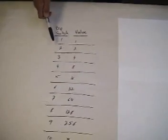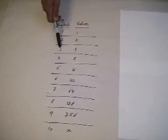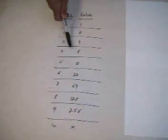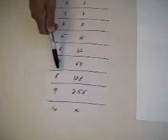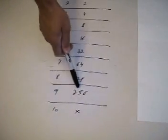Dip switch number 1 has value 1, dip switch number 2 value 2, dip switch number 3 value 4, 4 has 8, dip switch number 5 is 16, 6 is 32, 7 is 64, 8 is 128, 9 is 256.